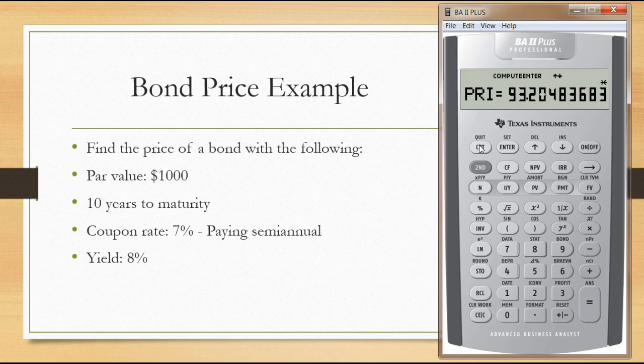This is a tad bit different than what we had before. Before, we had 932.048. When we calculate the price of the bond using the bond function, this gives us the price per $100. To get to our example of the bond with $1,000 par value, we simply move that decimal place over to 932.048, which is the same exact answer we had for the time value of money functions method.